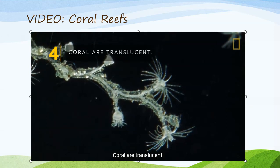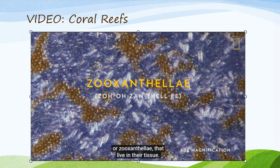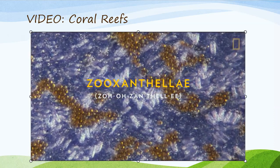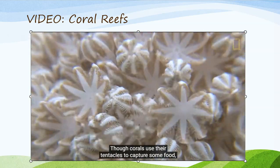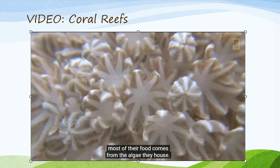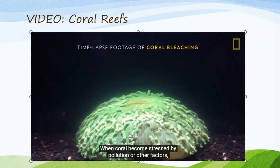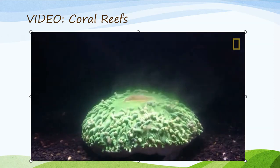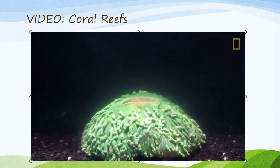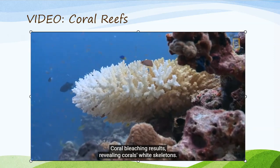Coral are translucent. Coral reefs get their rainbow of colors from algae, or zooxanthellae, that live in their tissue. Though corals use their tentacles to capture some food, most of their food comes from the algae they house. When coral becomes stressed by pollution or other factors, they evict their algae, and coral bleaching results, revealing coral's white skeletons.